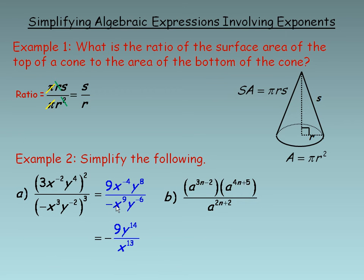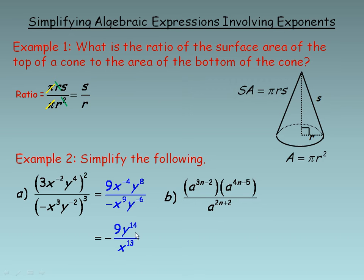The larger power of x is in the denominator, so we subtract in this order: 9 take away negative 4. Since I started with the 9 in the denominator exponent, the power of x will stay in the denominator. Now lastly, the larger power of y is in the numerator, so I would subtract 8 take away negative 6, which is the same as 8 plus 6, giving 14. So y to the 14th in the numerator.